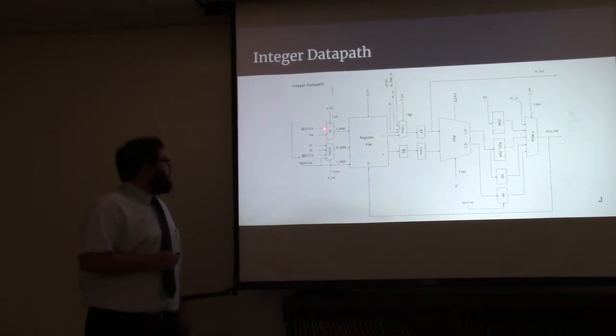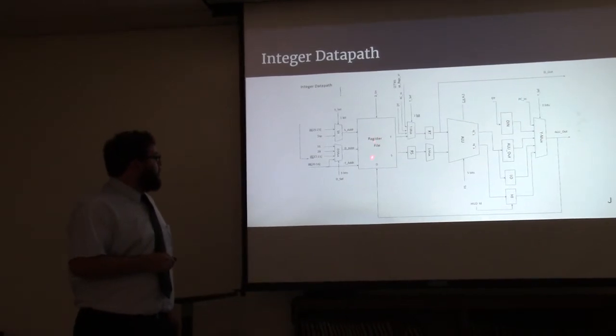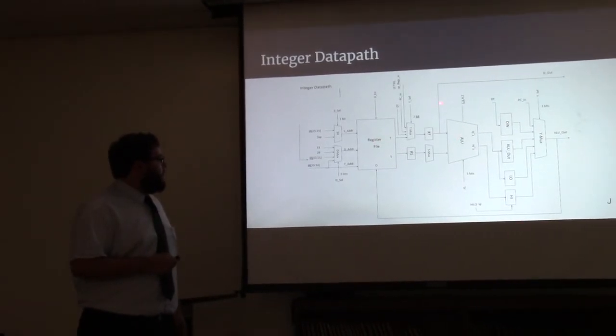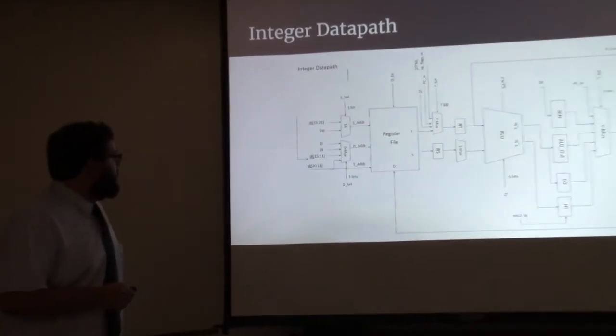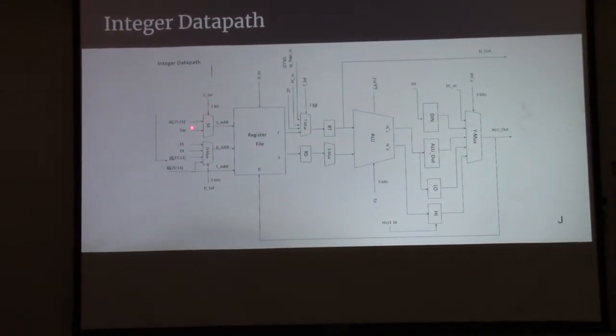The integer data path has the main modules of a register file and an ALU with intermediate registers and muxes in between. The S address is selected by a S select signal determining if we want to choose the stack pointer or the normal S address IR register field. The dmux has a similar thing selecting hard-coded 32 and 29 for respective registers and then the various other possible registers.